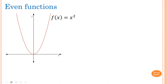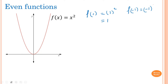A simple even function is f(x) equals x squared. Let's evaluate f(1). So f(1) is equal to 1 squared, which equals 1. And f(-1) is equal to negative 1 all squared, which is 1. So you can see that f(1) is equal to f(-1).